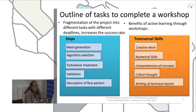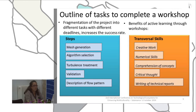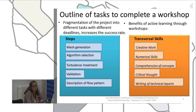Algorithm selection is involved with increasing the numerical skills of the students. They also have to compare the performance of different turbulence models, and the validation task is involved with comprehension of concepts as well as developing critical thought. Finally, they have to describe the flow pattern, which is more connected with writing technical reports.